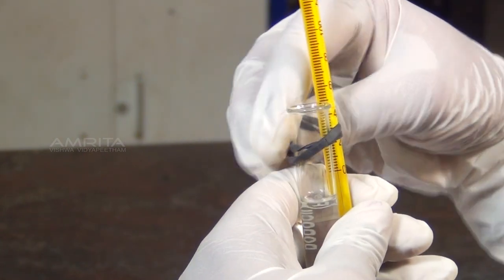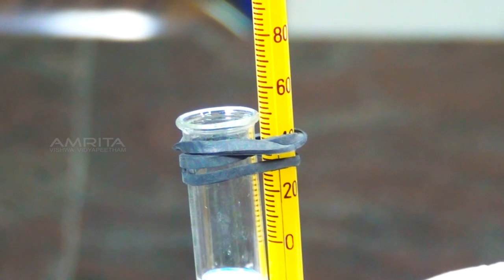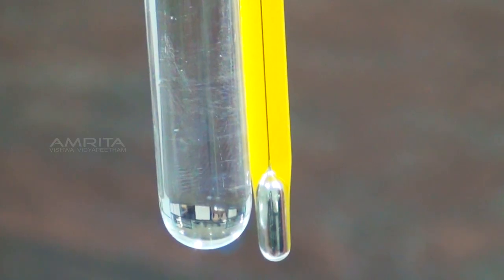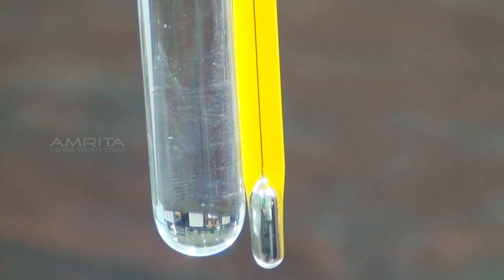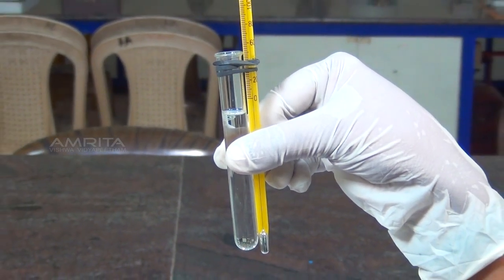Fix this test tube to the thermometer with the rubber band in such a way that the bottom of the tube is at the middle of the thermometer bulb. The rubber band should be fixed near the mouth of the tube.